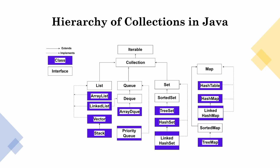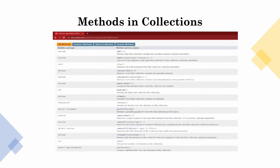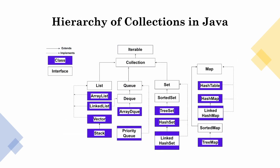Coming to methods in collections — this is a snapshot taken from docs.oracle.com. There you can see methods like: add, addAll, clear, contains, containsAll, equals, hashCode, isEmpty, and more. All these methods are provided to us for collections across every implementation — ArrayList, Vector, LinkedList — all have these kinds of methods available.